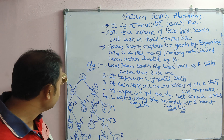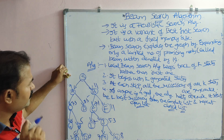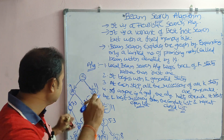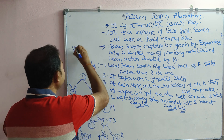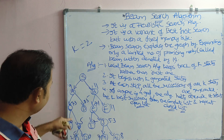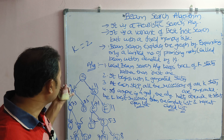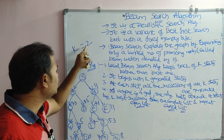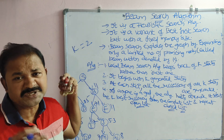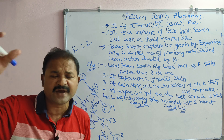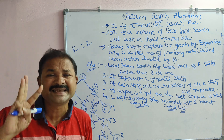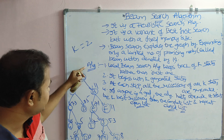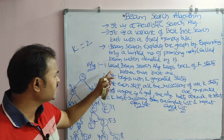We explore the graph by expanding only a limited number of promising nodes. If the beam width k equals 2, then when a node generates several successors, we take only the best 2 successors. If beam width is 3, we choose only 3 successors. We'll get perfect clarity while working through the example.